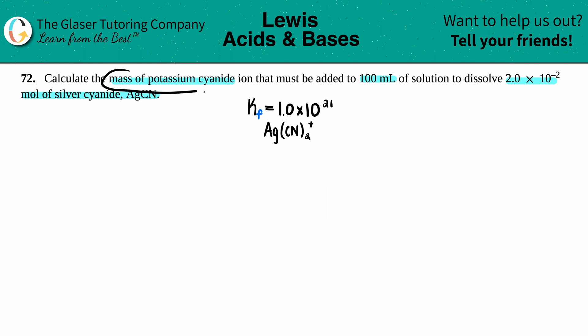They're asking to calculate the mass of potassium cyanide ion, but potassium cyanide is not an ion, it's an ionic compound. Potassium cyanide is KCN, so we're just going to treat it like that. We just want to find out what the mass of KCN is.